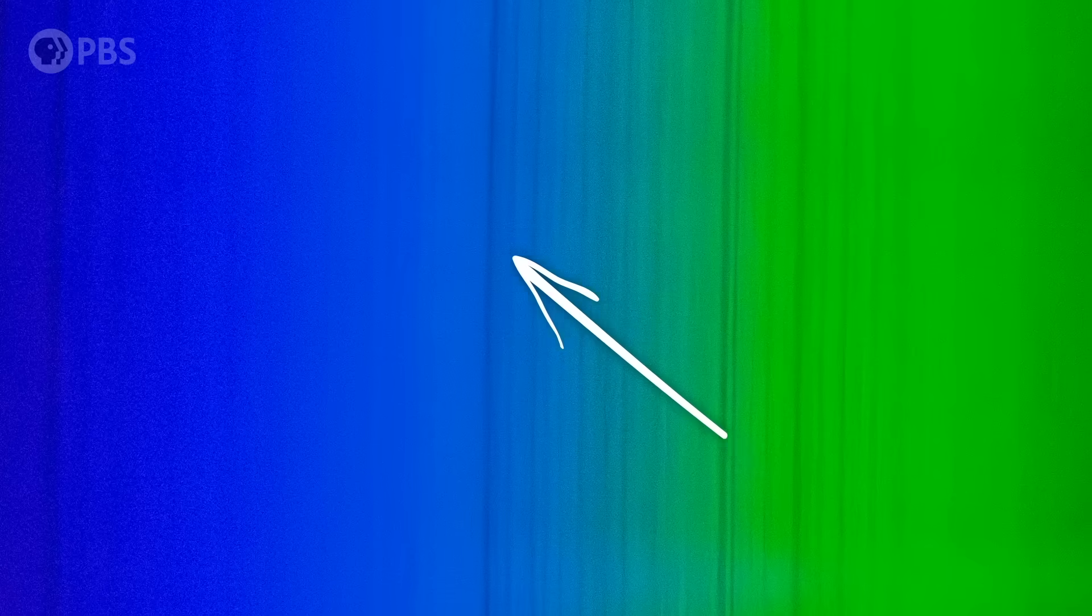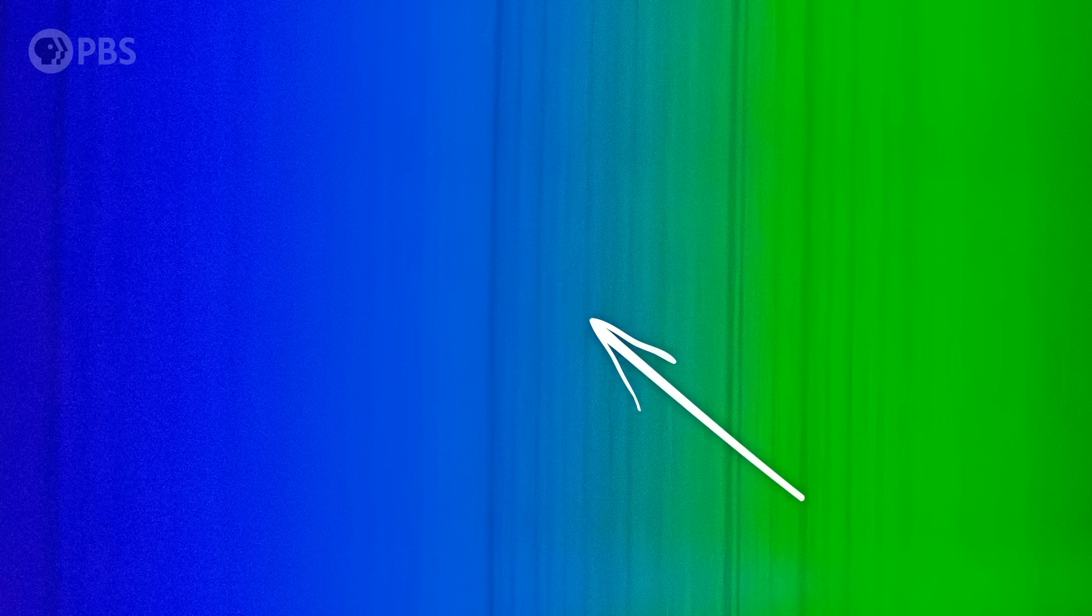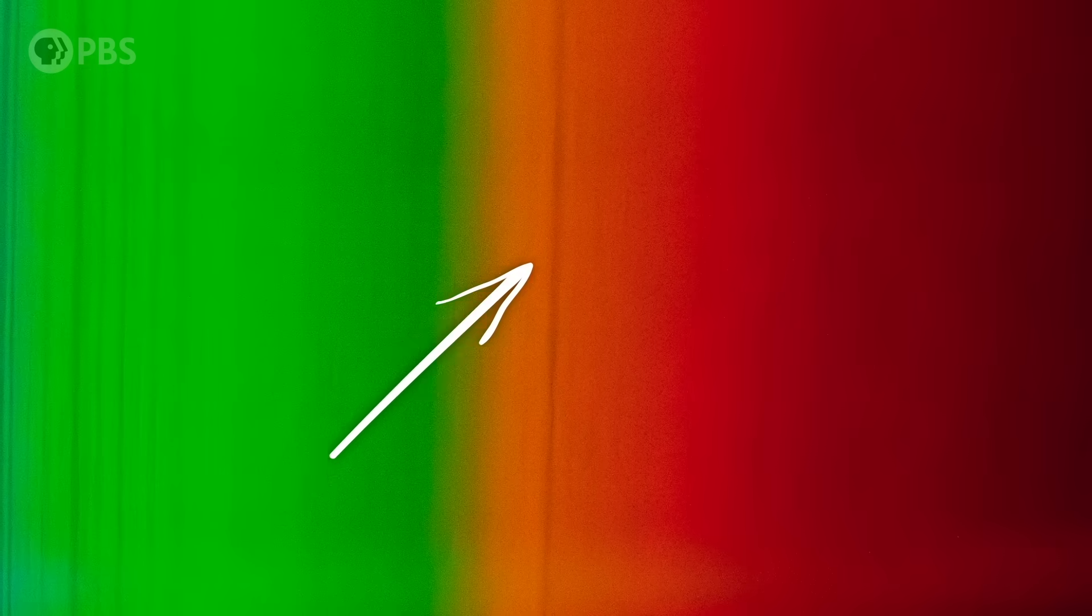And thanks to Kirchhoff and Bunsen, we can actually decode these lines now. So these really dark ones you see, those are hydrogen lines. The sun is mostly hydrogen, so we have a lot of absorption there. And here is sodium, the dark line in the yellow. It's actually two lines really close together, but we don't have enough resolution to make out both of them.